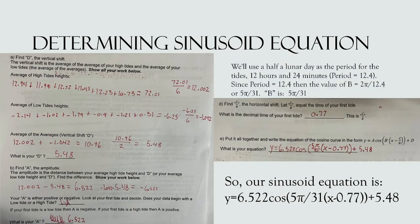We must determine a sinusoid equation in order to graph our data. The first step is to find the vertical shift. To find the vertical shift, we find the average of the high tides and the average of the low tides. Then we find the average of those averages — high tides average plus low tides average divided by 2 — which gives us our d value of 5.48.